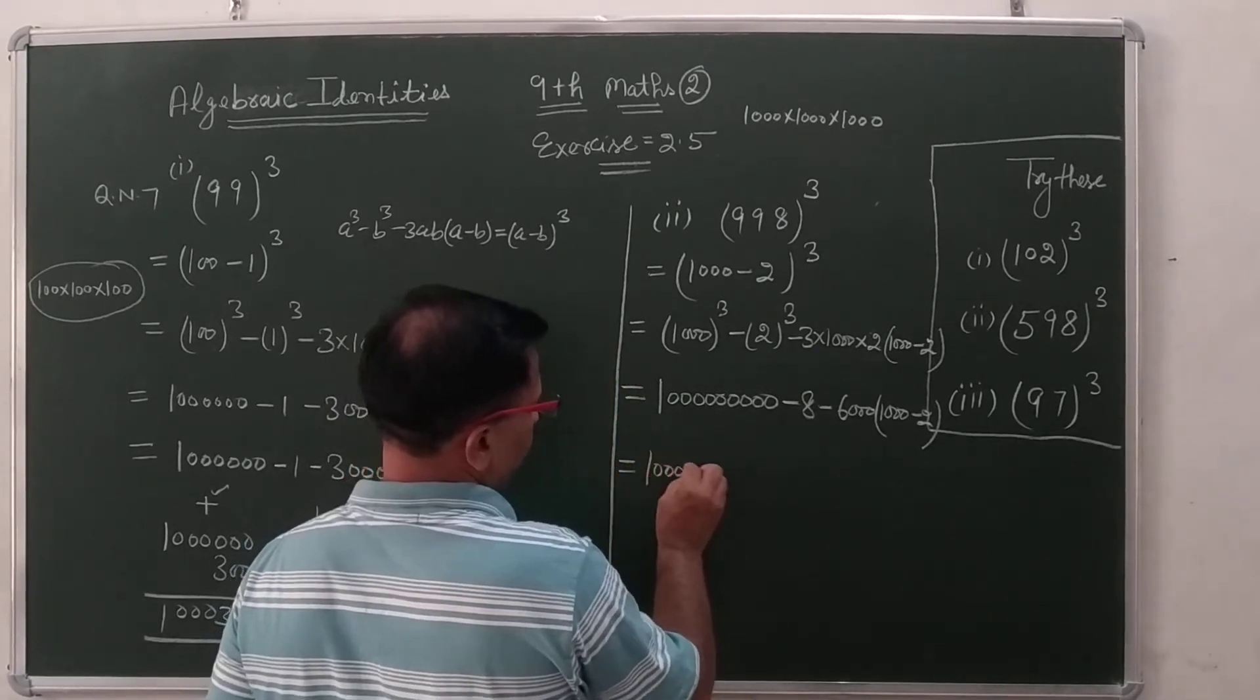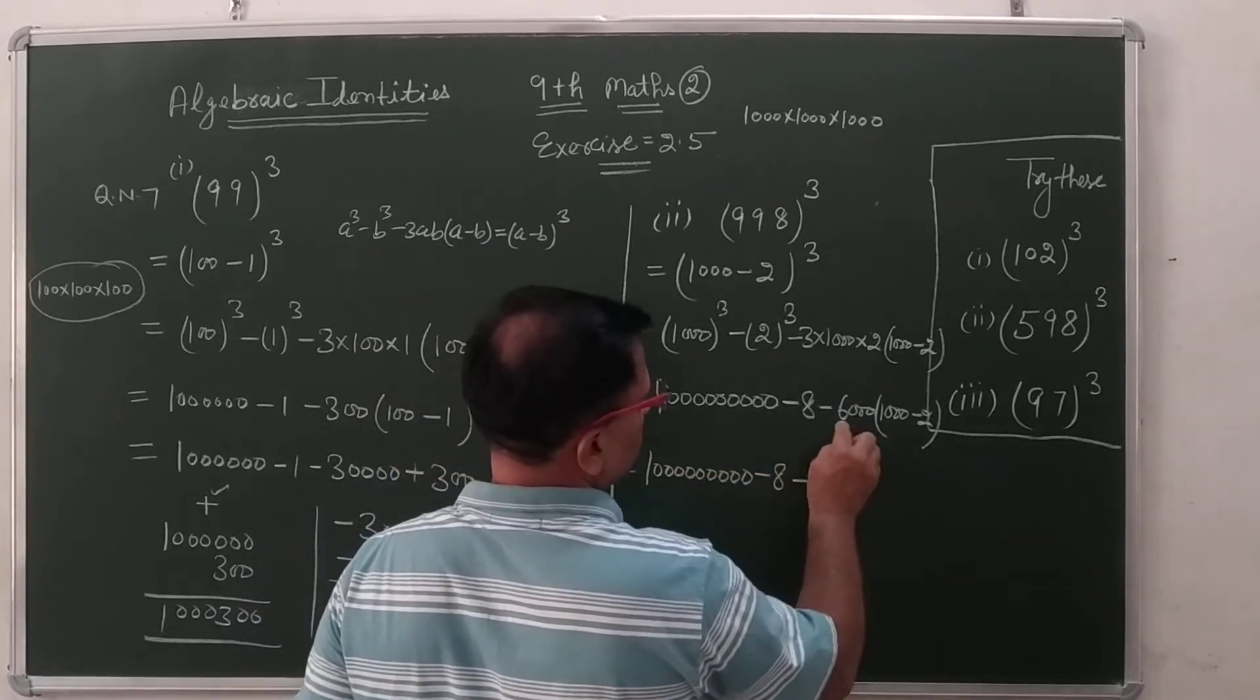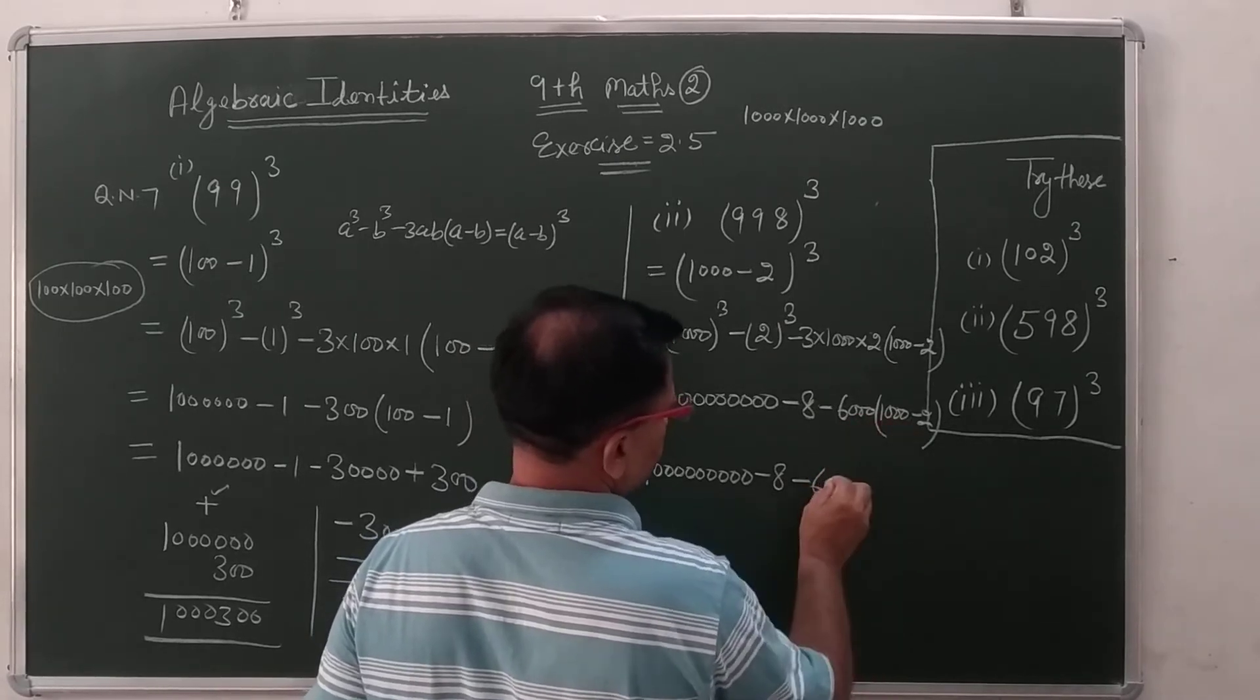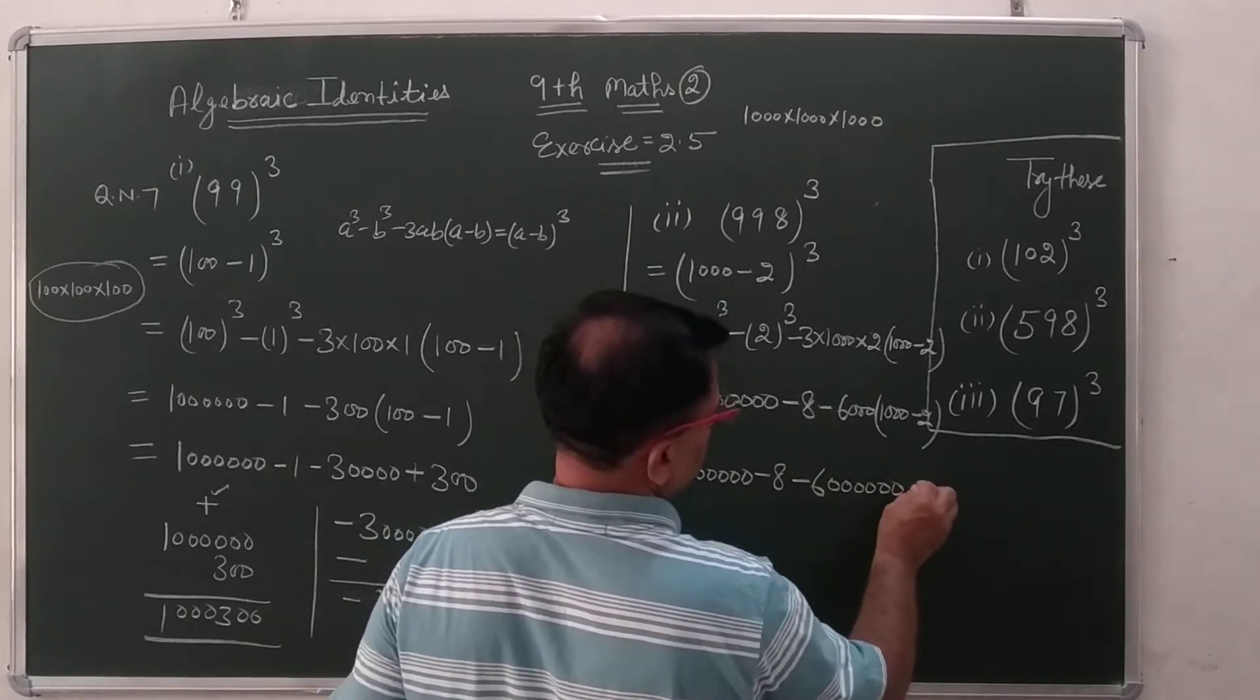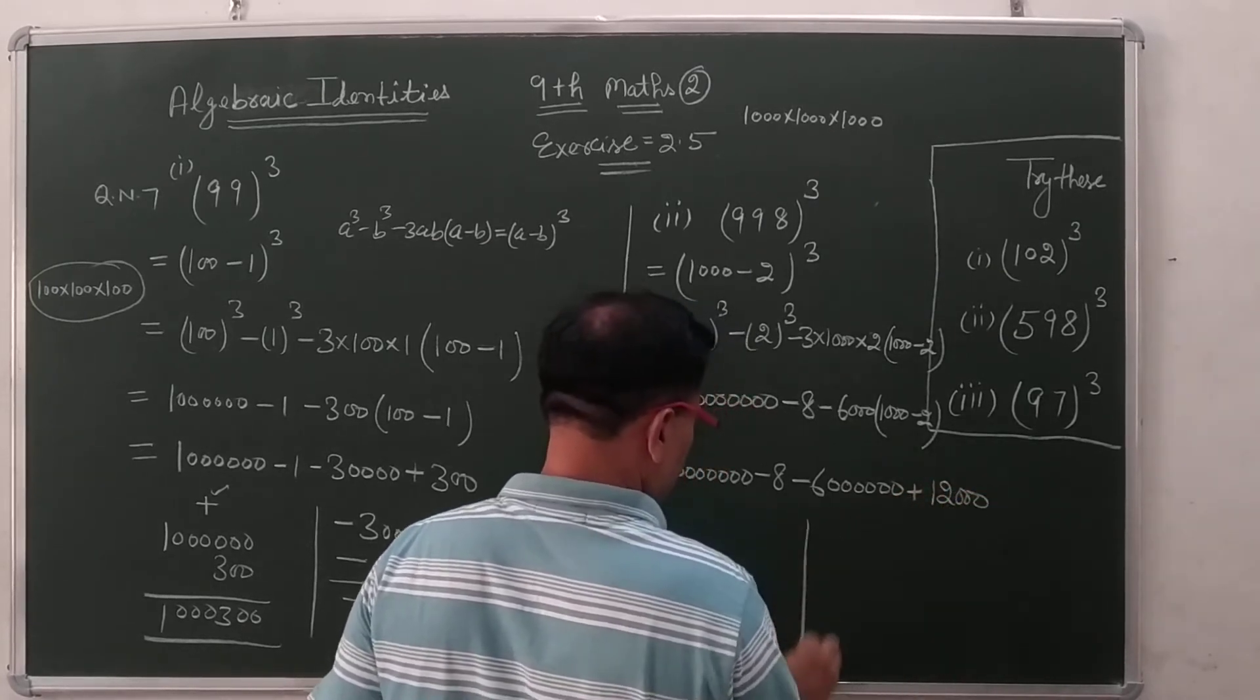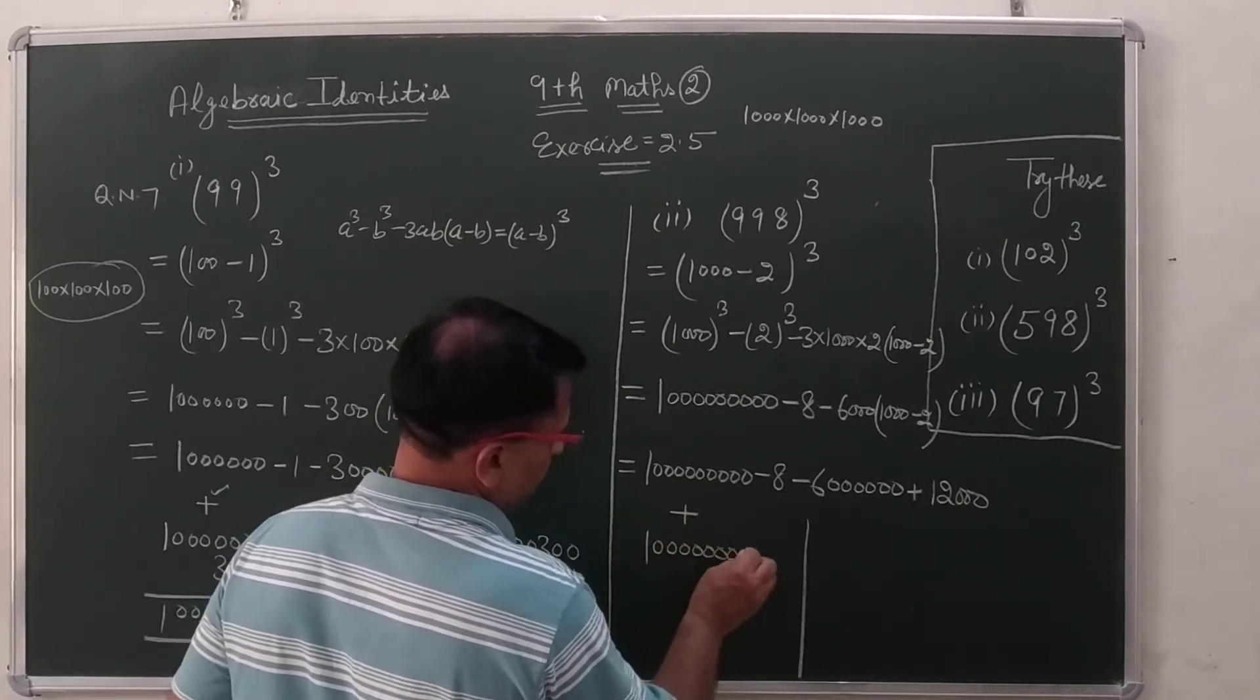1, 2, 3, 4, 5, 6, 7, 8, 9 minus 8 minus 6, 1, 2, 3, 4, 5, 6 is 0. 1, 2, 3, 4, 5, 6 minus minus plus 12,000. 1, 2, 3, 4, 5, 6, 7, 8, 9.